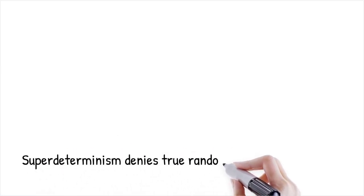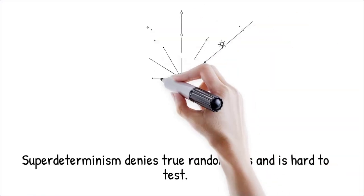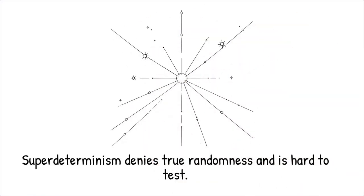Super-determinism is difficult to test because any attempt to prove or disprove it would itself be predetermined. Unlike standard hidden variable theories, e.g. Bohmian mechanics, which still allow independent choices, super-determinism suggests that there is no true randomness in nature.